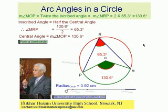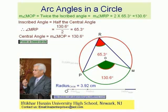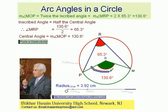This visual demonstration will show you that the measure of the central angle is equal to twice the measure of its inscribed angle. This central angle, which is right now 130.6 degrees, is twice the value of its inscribed angle, which is this one.